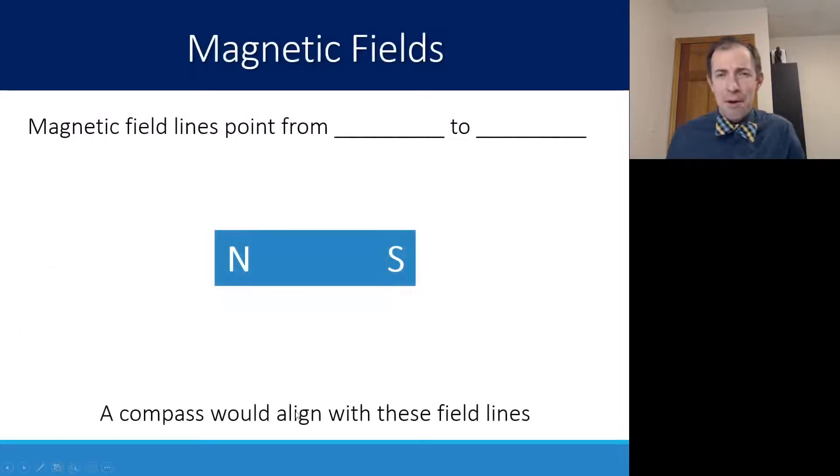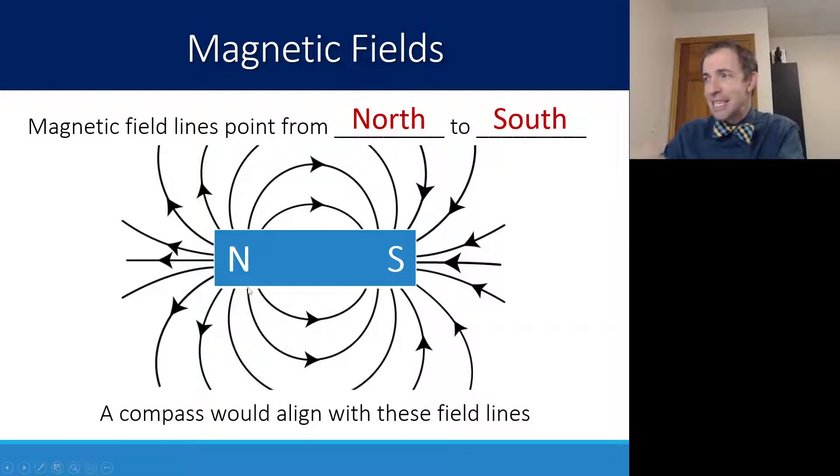A permanent magnet has domains that look something like this in the bottom picture. And say we take that permanent magnet and we want to draw what the magnetic field looks like around it. We've already looked at an electrostatic field or a gravitational field. We saw how the arrows, the vector field, points.